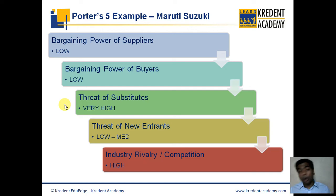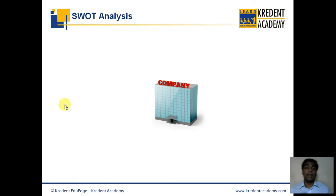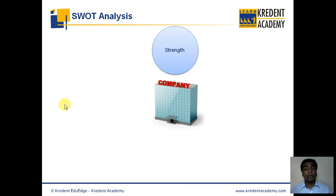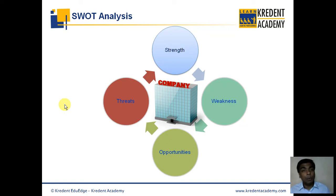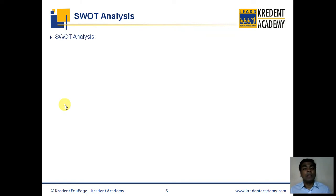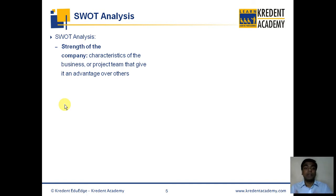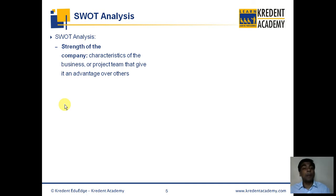The other model one can use to analyze any company is the SWOT analysis. SWOT looks at four key points: Strengths, Weaknesses, Opportunities, and Threats. It asks simple questions about the company — specifically, what are the characteristics of the business or team, and what sets the company apart? What is the strength of the company that makes it different from its competitors?